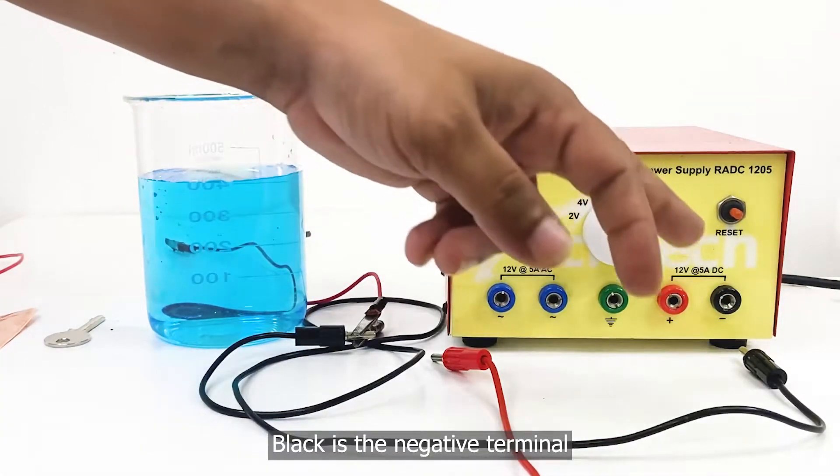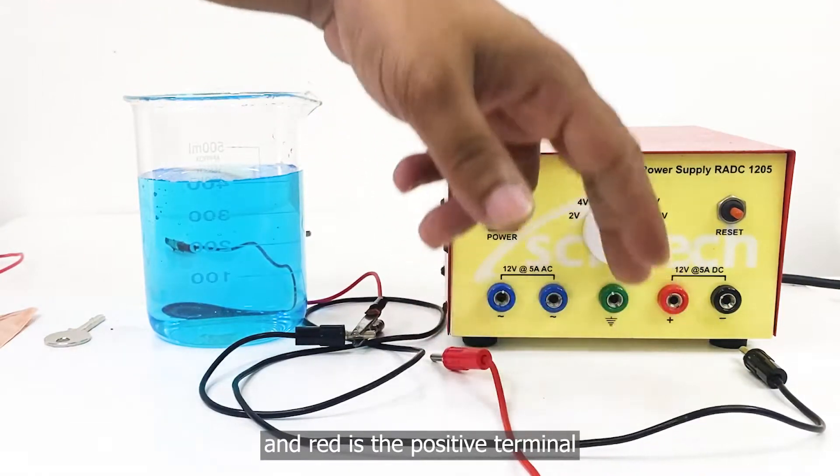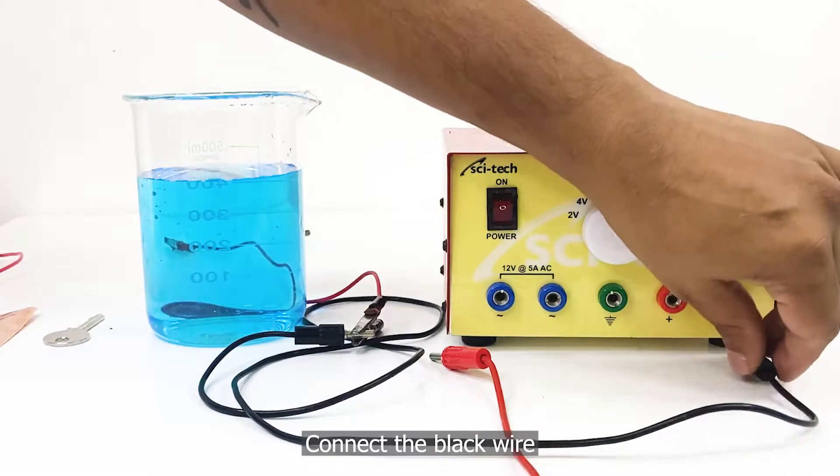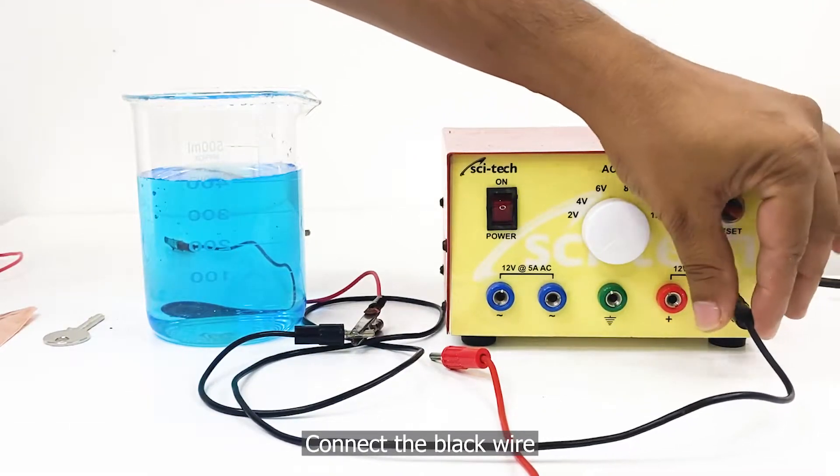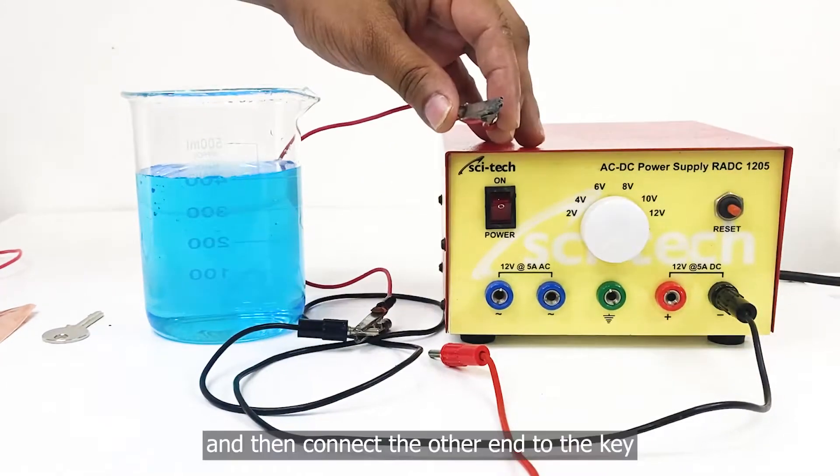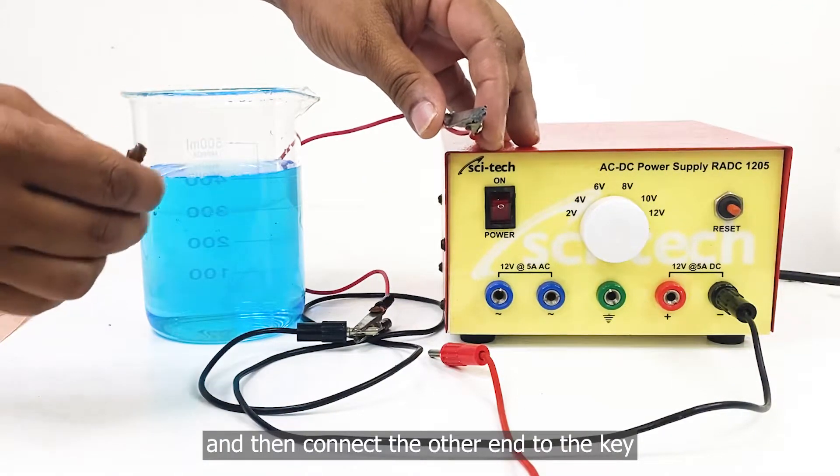Black is the negative terminal, and red is the positive terminal. Connect the black wire and then connect the other end to the key.